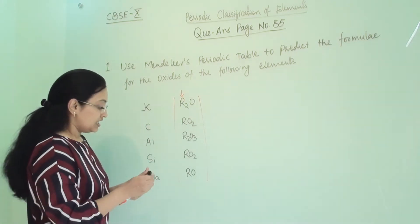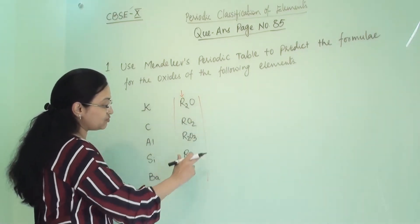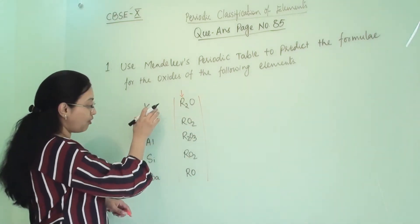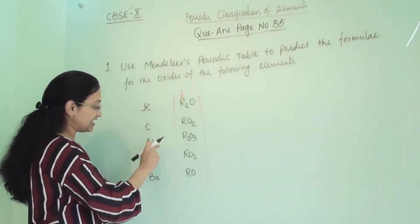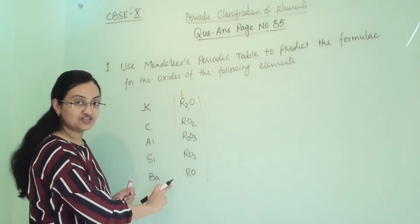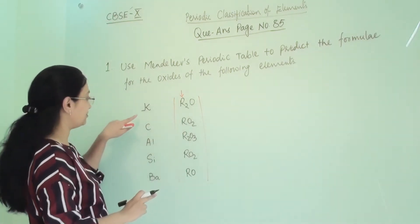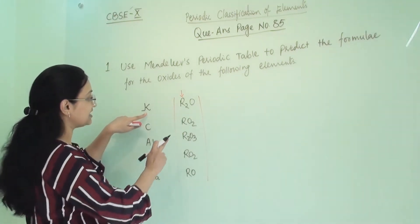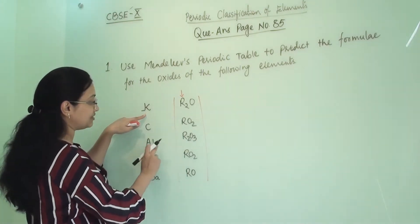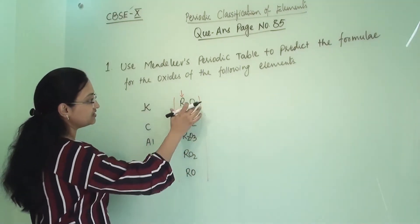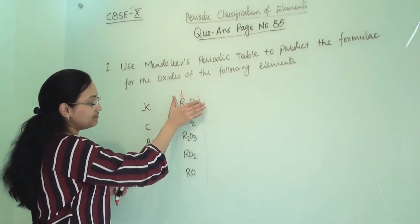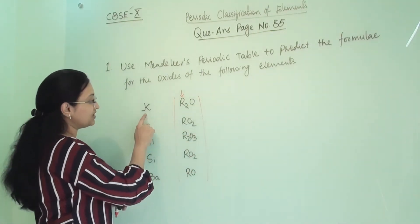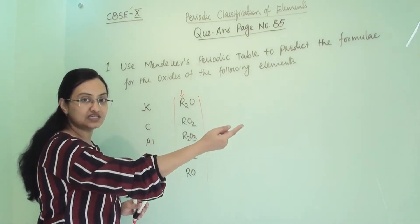Here in this, these are the generalized molecular formulas for all of these element groups. These are the elements, and I have written the generalized molecular formula for that particular group. So here potassium is there, so R is that particular element and O means oxygen is attached to that.